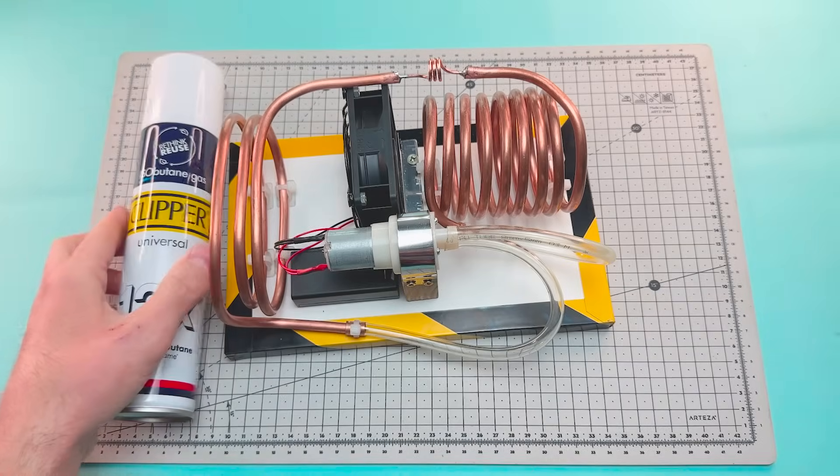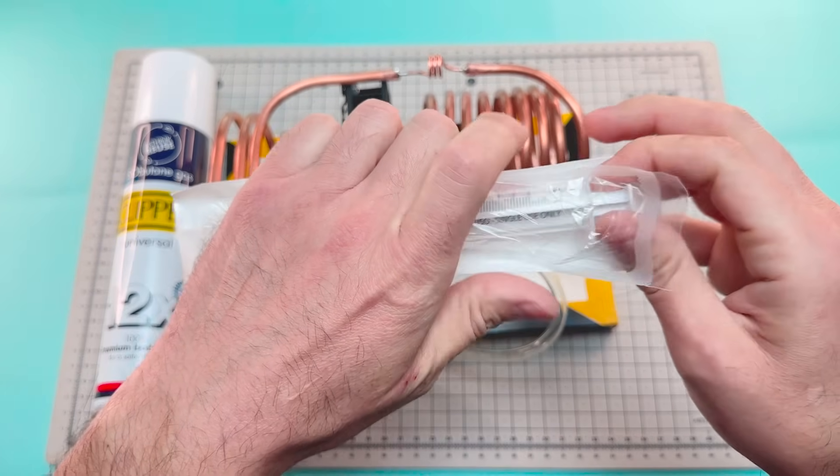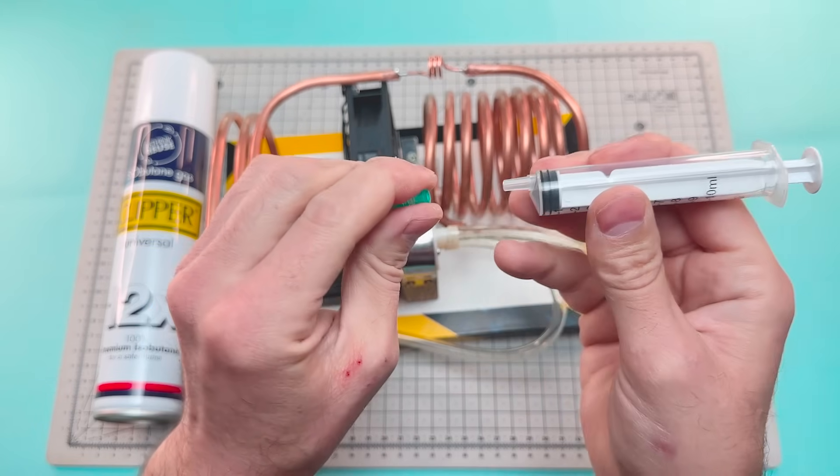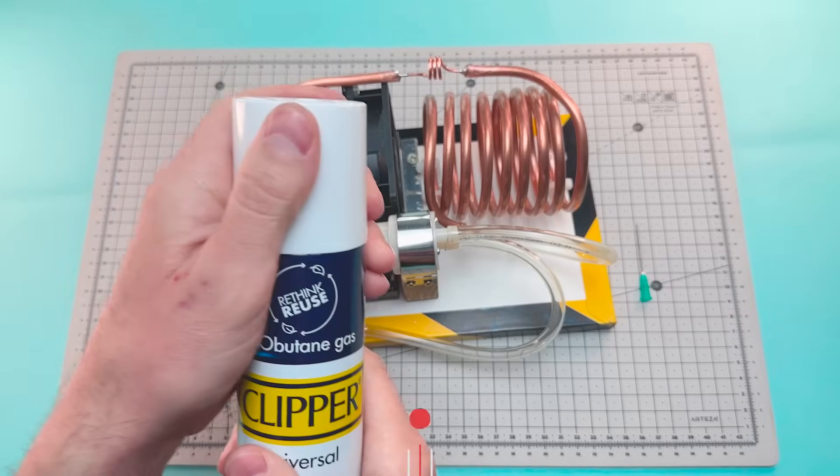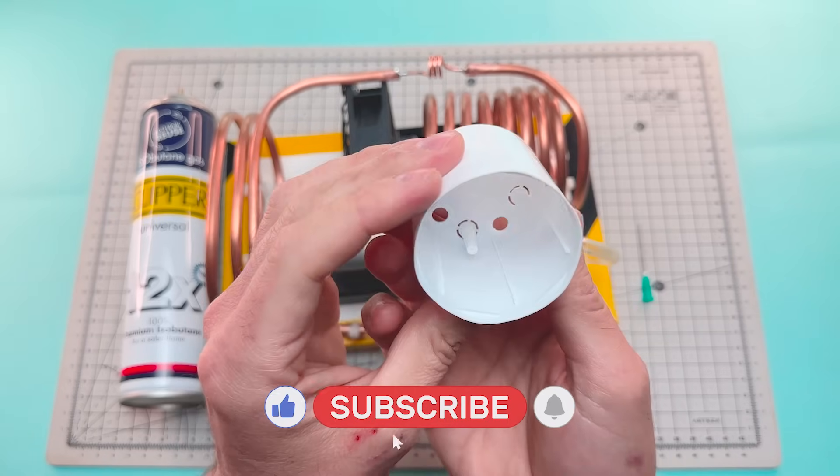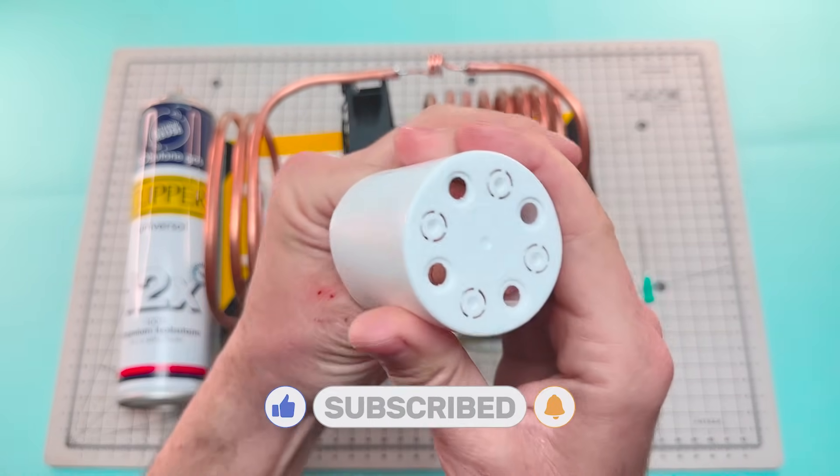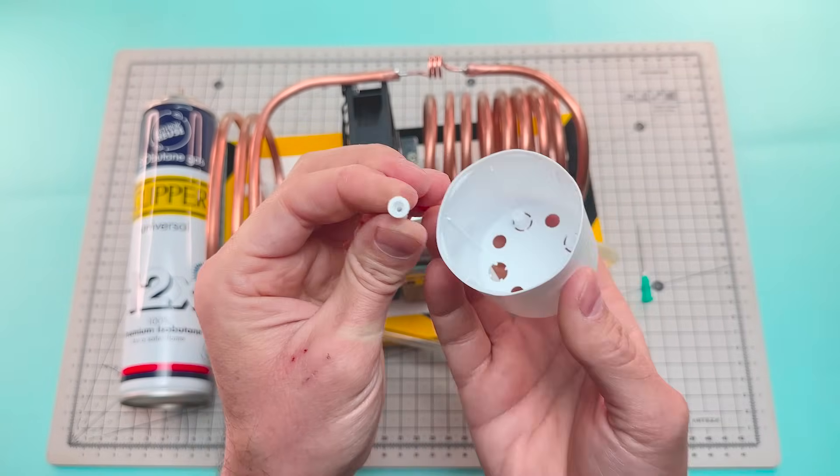We'll use a syringe to inject the gas into the circuit. When isobutane changes from liquid to gas, it needs energy to do so. And that energy is drawn from the heat in the surrounding air. That heat transfer is what cools the system.